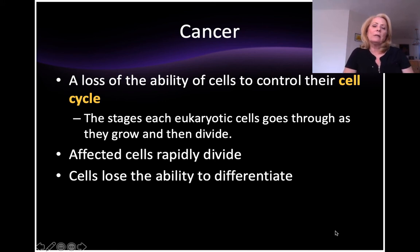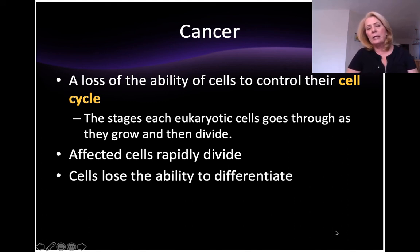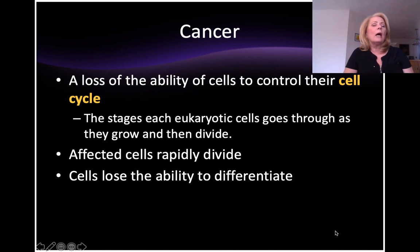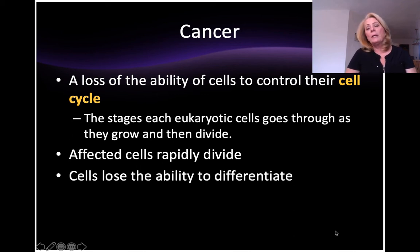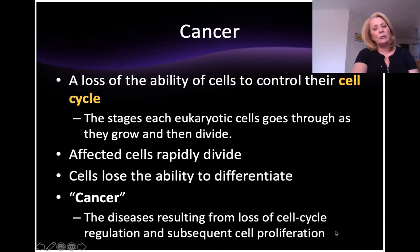You have cells that are undifferentiated — we typically call those stem cells — and cells that are differentiated. Stem cells haven't yet figured out what kind of cell they're going to be, whether a bone cell or a heart cell. Once they become that kind of cell, the cell is differentiated. A cell that cannot go through the cell cycle appropriately loses its ability to be differentiated. Cancer is officially a disease resulting from the loss of cell cycle regulation and cell proliferation.